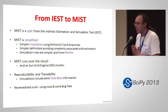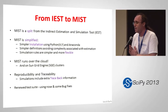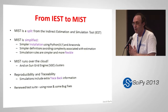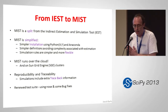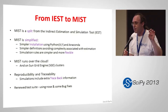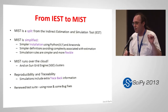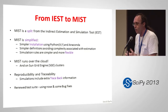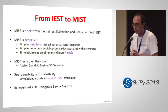MIST is not new. MIST is a split from an existing framework, also built in Python, called ICE — the Indirect Estimation and Simulation Tool. It has been around for quite a while. MIST doesn't have estimation in the name because MIST simplified ICE by dropping estimation, which makes it much more usable. There are some improvements to make it easier for the user.